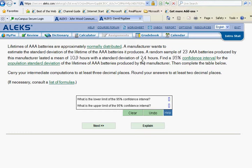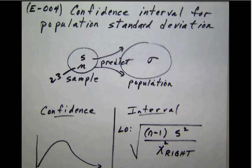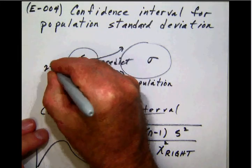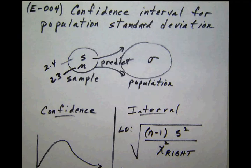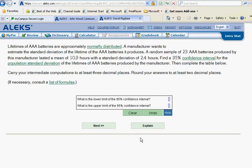Notice that in the problem it tells us the mean of 10.9 but we don't care because that doesn't come up anywhere in the formula. But the 2.4, the s value does. So we need to put that 2.4 as s, our sample standard deviation. We have basically everything we need except we need the confidence level.